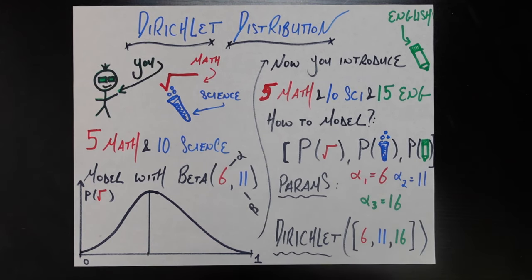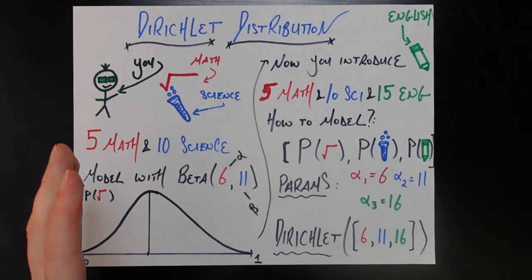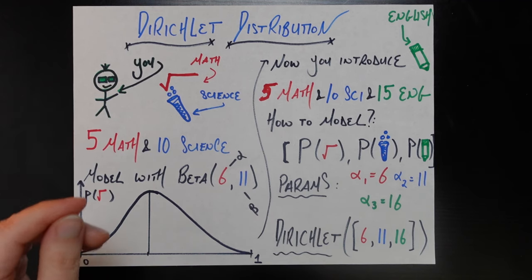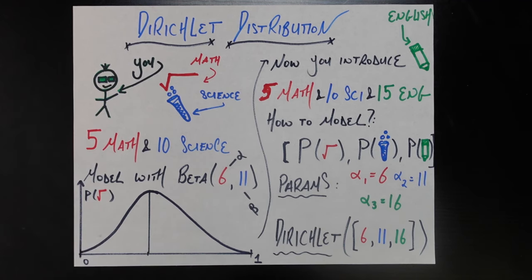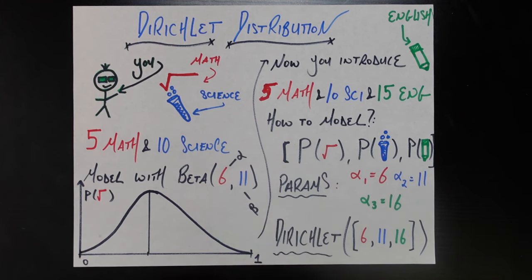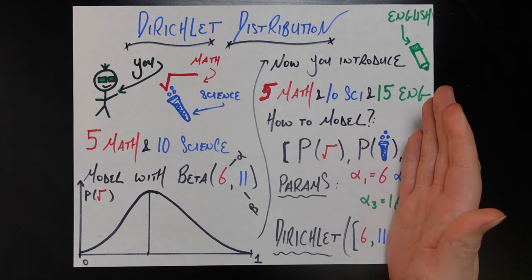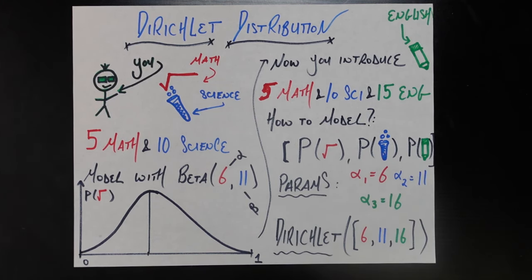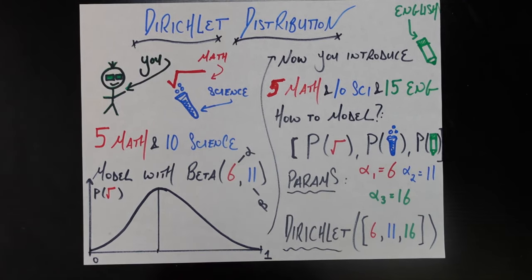The Dirichlet distribution, very simply put, is going to be the beta distribution but allowing for more than two categories. The beta distribution was used to model probabilities of two categories; the Dirichlet distribution is going to model the probabilities of three or more categories. Another way to say that is that the beta distribution is just a special case of the Dirichlet distribution — if we remove the third category, the probability density function reverts right back to the beta distribution.